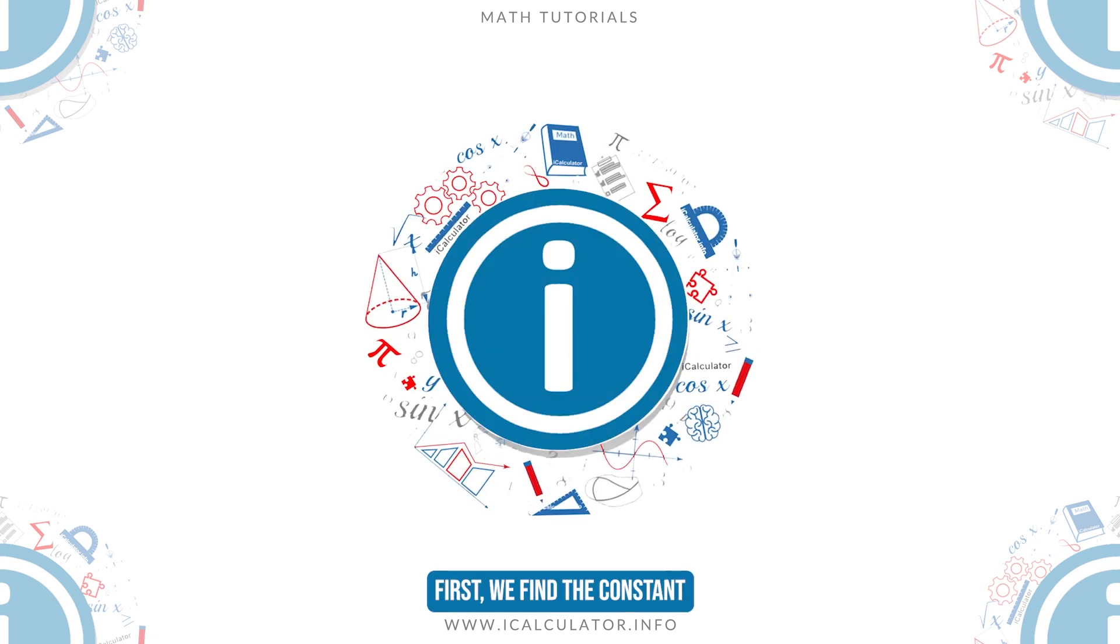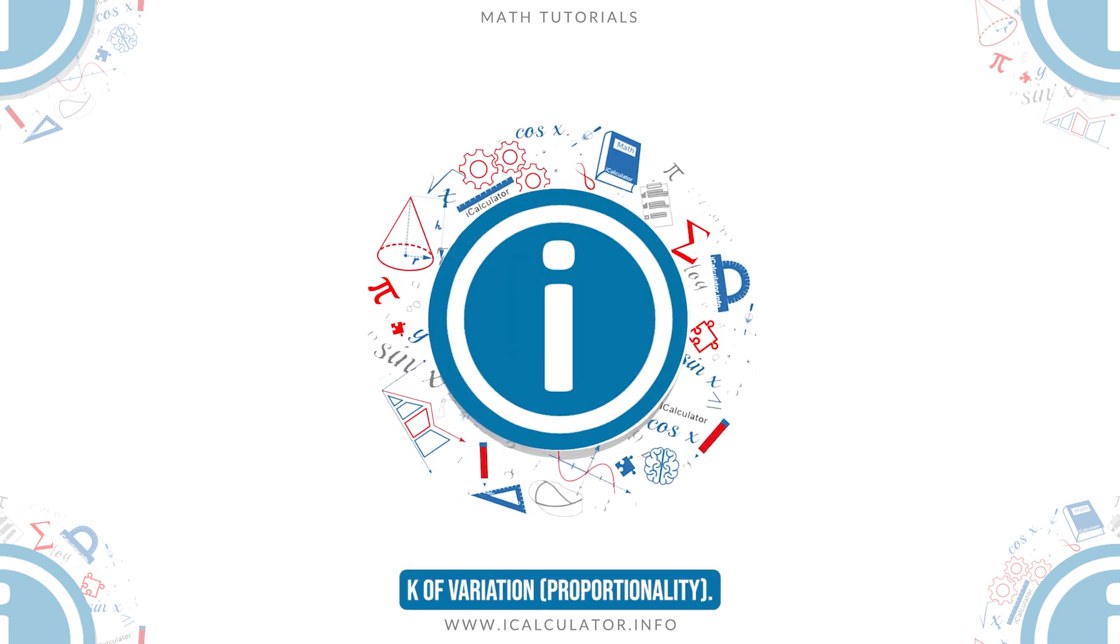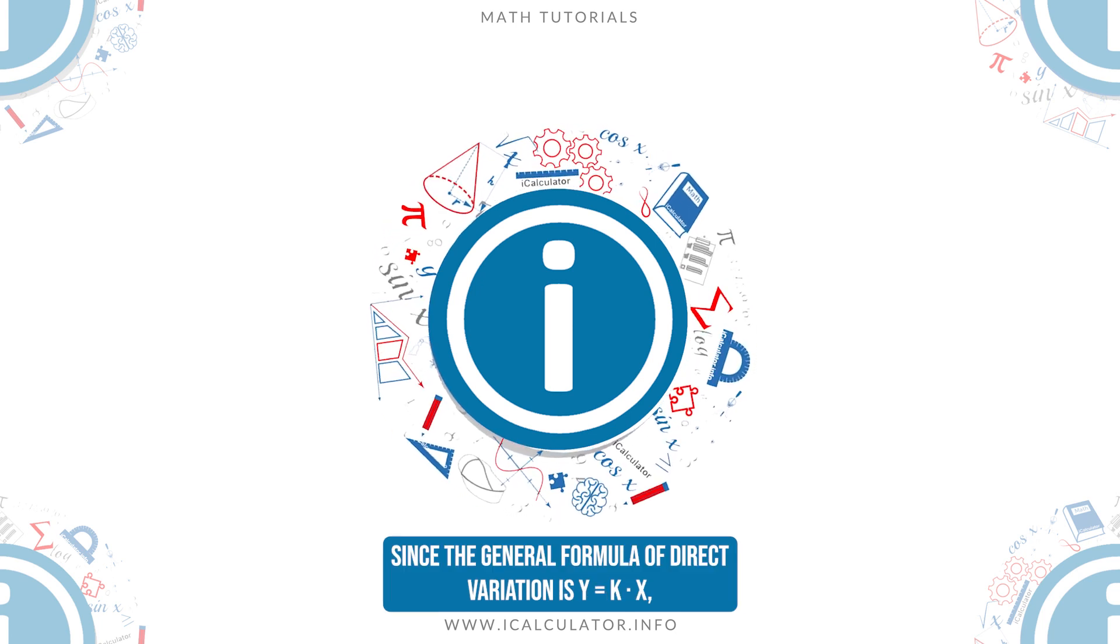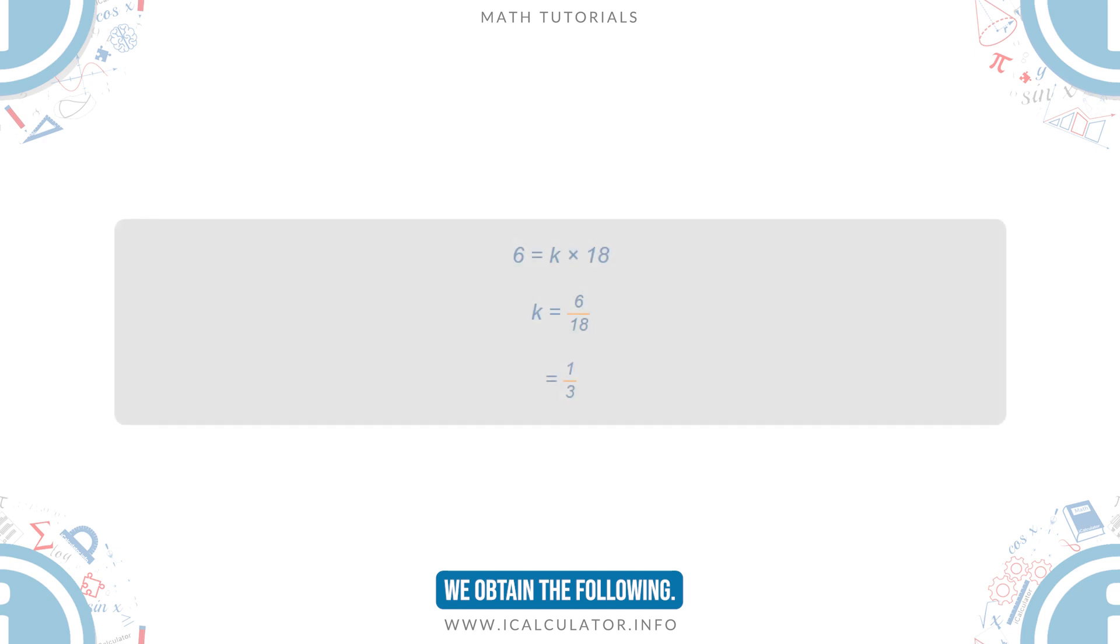Solution 2: First, we find the constant K of variation proportionality. Since the general formula of direct variation is Y equals K times X, we obtain the following. Thus, the formula of this specific variation is as follows.